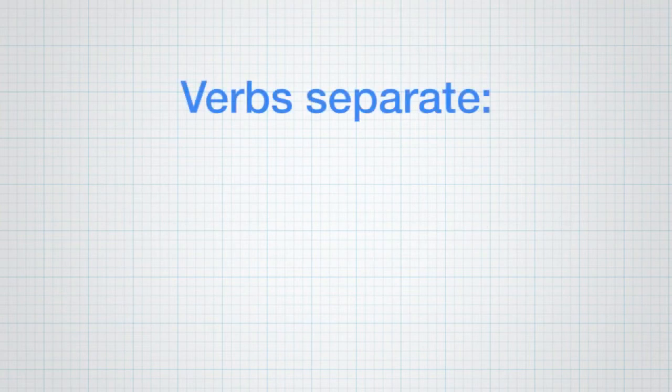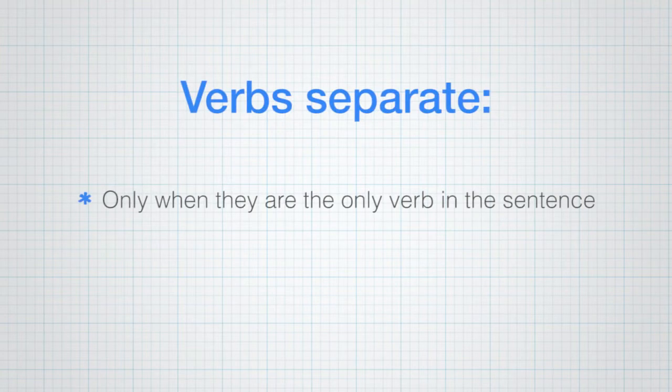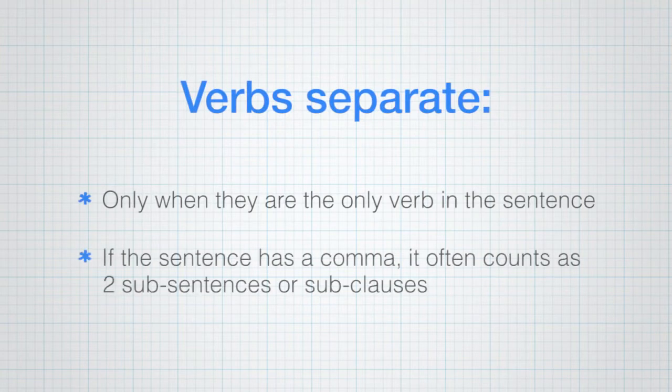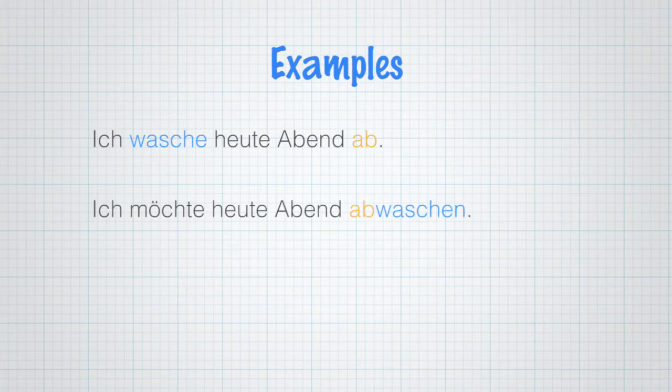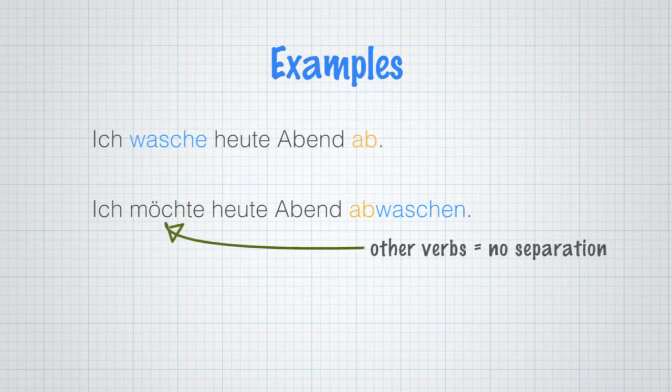Two little extra points. A verb will only separate when it's the only verb in a sentence. And if your sentence has a comma, that second half may count as a sentence. For example, Ich wasche heute Abend ab - I'm doing the washing up tonight. Ich möchte heute Abend abwaschen - I would like to do the washing up tonight. So in the first sentence, you've got the usual separation that you would expect. The second sentence has möchte as another verb, and it shows you that there isn't any separation going to happen.